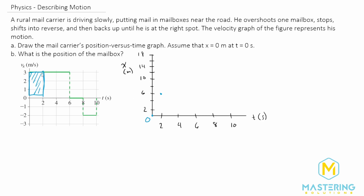It's moving at a constant velocity, so this is the same area — another two by three, so another six. At four seconds, it'll be at 12 meters. And then at six seconds, we have another six, so it's going up to 18 meters.